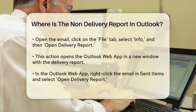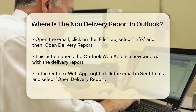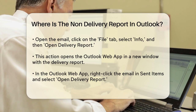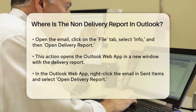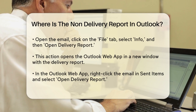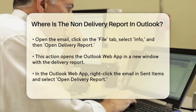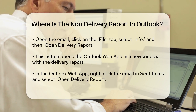In your Outlook desktop application, go to your Sent Items folder. Find the email you want to track and open it. Then click on the File tab, select Info, and click on Open Delivery Report. This will open the Outlook web app in a new window where you can see the delivery report.